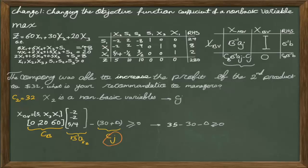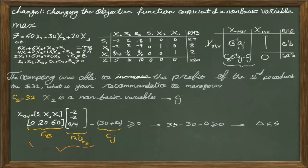Instead of writing 32, we solve the problem for a more generic answer. Multiplying the vector and deducting the value of 30 plus delta, then enforcing the positive condition, we find that for any delta less than or equal to 5, the coefficient of X2 in the row of Z is positive. Thus we remain in the same optimal table and the production plan doesn't change — X2 remains a non-basic variable with value zero.